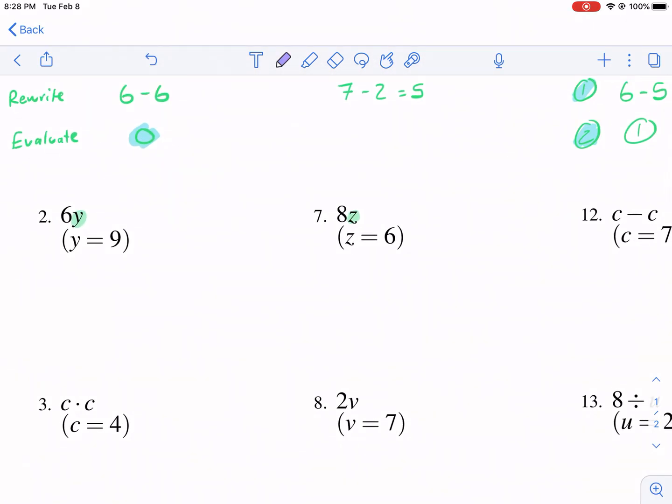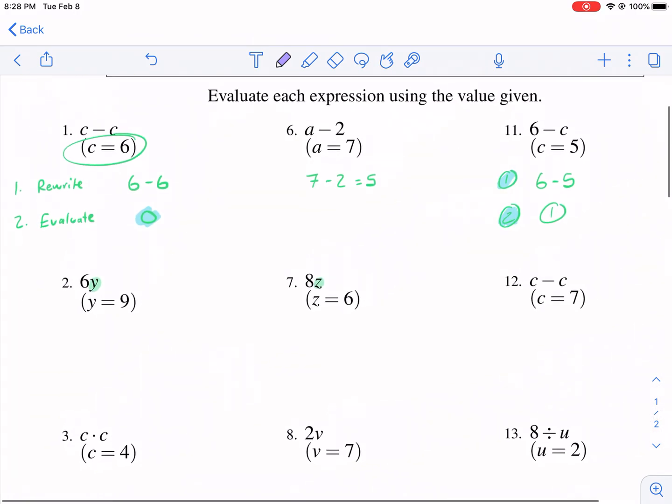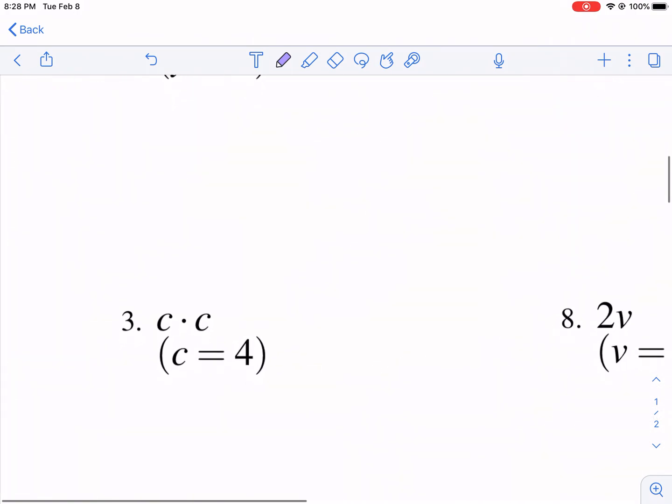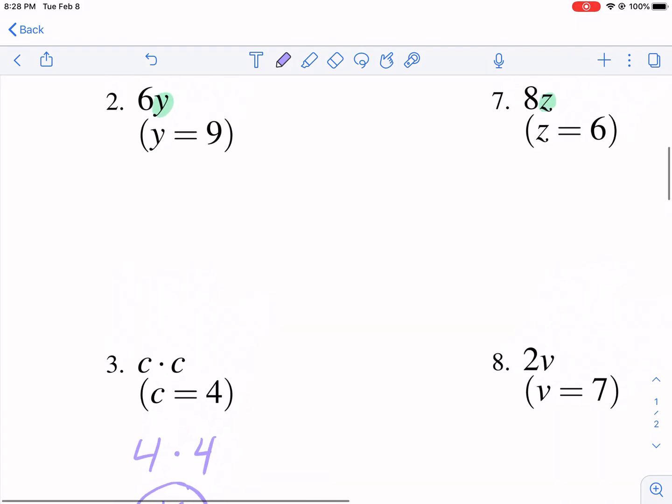Now here's the step that I'm guessing some of you are going to have trouble with. I'm going to start with number 3 actually. So number 3 we have c times c. That dot means multiplication if you haven't seen that yet. So we really have 4 times 4. That's my first step. I'm rewriting it. And the second step I evaluate. I find the answer and it's 16.